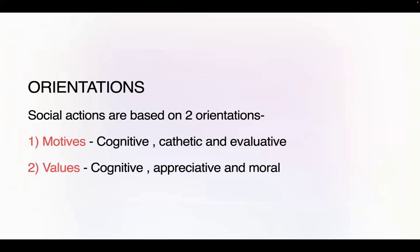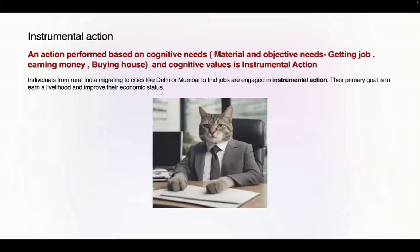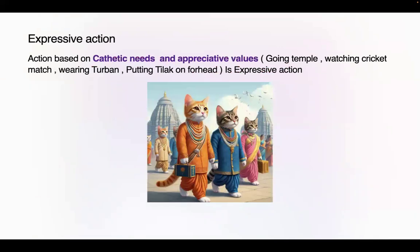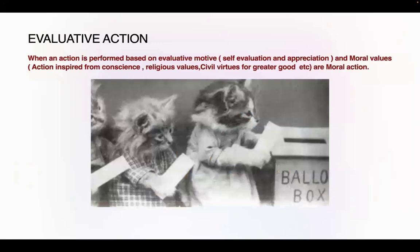Orientations: social actions are based on two orientations — motives and values. Motives can be cognitive, cathartic, and evaluative. Values can be cognitive, appreciative, and moral. There are three main types of action. Instrumental action — like a cat getting a job — is based on cognitive needs and cognitive value. Expressive action — like visiting a temple or watching a cricket match — is based on cathartic needs and appreciative value. Evaluative or moral action — like queuing up to vote — is based on evaluative motive and moral values, oriented toward greater good.